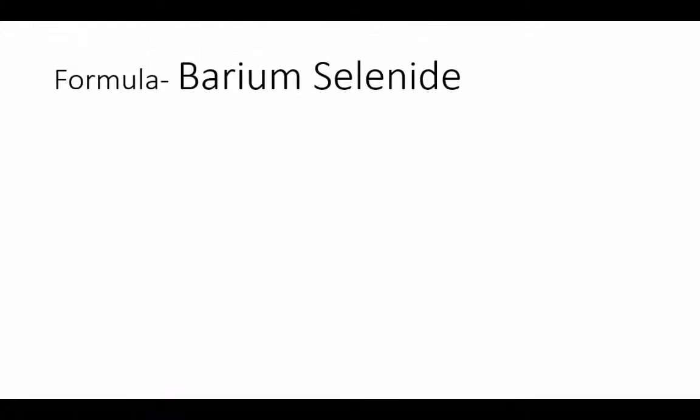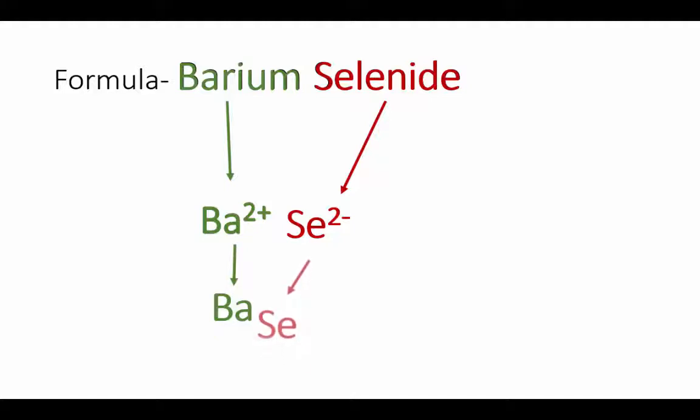Our first compound has a group 2 metal, barium, which has a 2+ charge, so barium is Ba²⁺. Our nonmetal is selenide, Se²⁻, that's in group 16. You'll notice that our two charges already add up to zero, and so we can write the formula now. This gives us a good base to start with because we have one of each, BaSe. Also notice that when we only have one of each, we don't write ones as subscripts. So our formula is just BaSe.